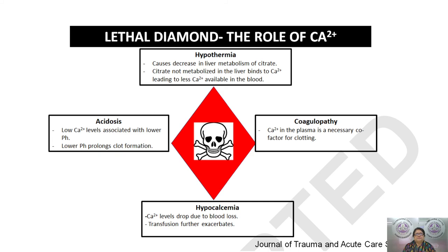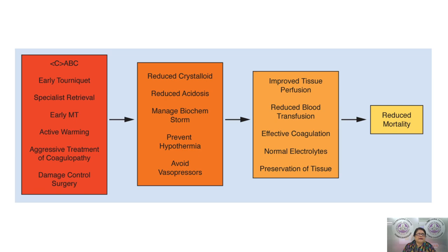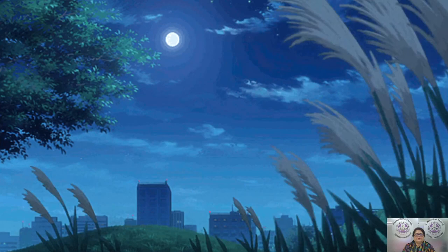To summarize: trauma guidelines dictate circulation management earlier than traditional ABCs — early tourniquet, specialist retrieval, early massive transfusion, active warming, aggressive treatment of coagulopathy, and damage control resuscitation. For this we must reduce crystalloid, reduce acidosis, manage biochemistry, prevent hypothermia, avoid vasopressors to prevent clot disruption, and improve tissue perfusion by giving blood transfusion, ensuring effective coagulation, maintaining normal electrolytes, and preserving tissue — all of which will reduce mortality. Thank you very much for your kind attention.